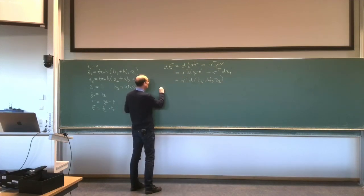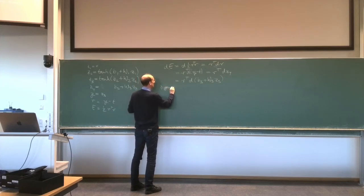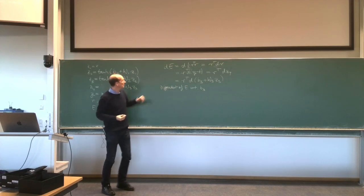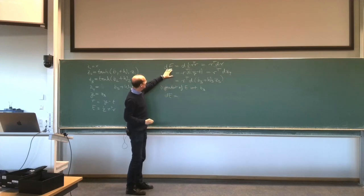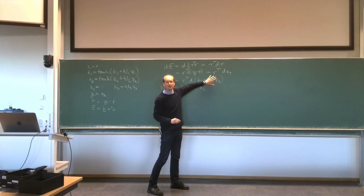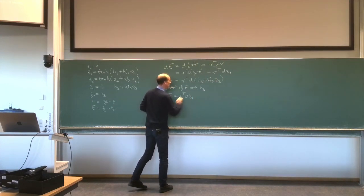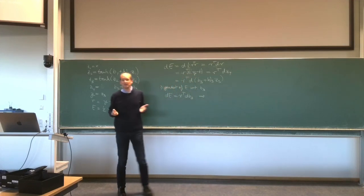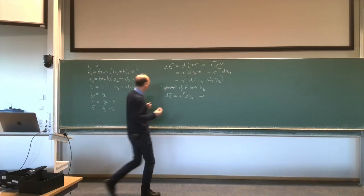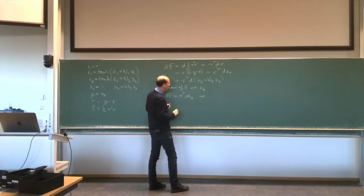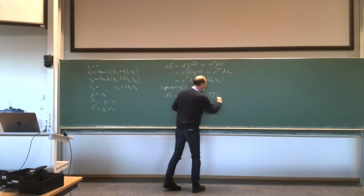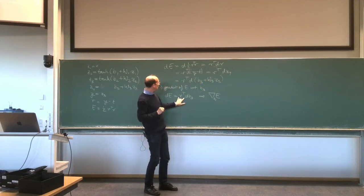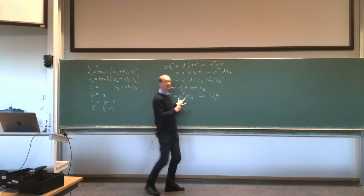For the gradient of E with respect to B3: since W3 times Z3 is constant when differentiating with respect to B3, we get dE equals R-transpose dB3. From this we can read off the gradient. Gradients have the same shape as the variable we're differentiating with respect to. Using the nabla notation, the gradient with respect to B3 is the transpose of R, which equals R.